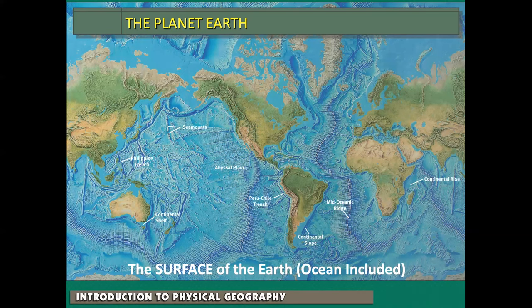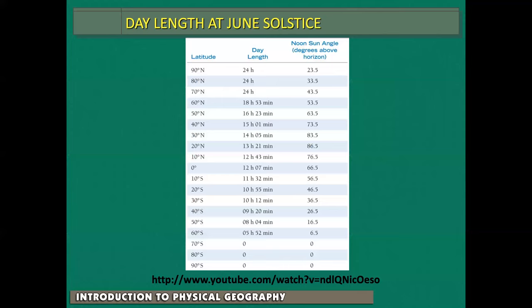The idea of day length in June — during our northern hemisphere summer, if you're at latitude 90 north, the North Pole, you have 24 hours of sunlight. But if you're at the South Pole, it's dark the entire time. That's how it varies from 90 south all the way to 90 north. So that's the first lesson — pretty straightforward stuff.